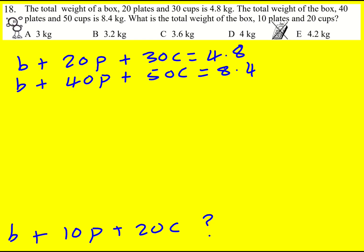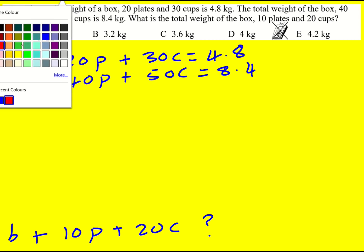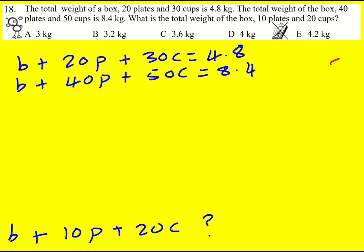Well we kind of have simultaneous equations here but three unknowns. But we're not actually trying to solve to find B, P or C. We're just trying to find a combination at the end. Now the thing that jumps out at me is to subtract these. If I add them I'm just going to be getting 2B plus 60P plus 80C. Is that really going to help? But if I subtract them then I can actually get rid of the B.